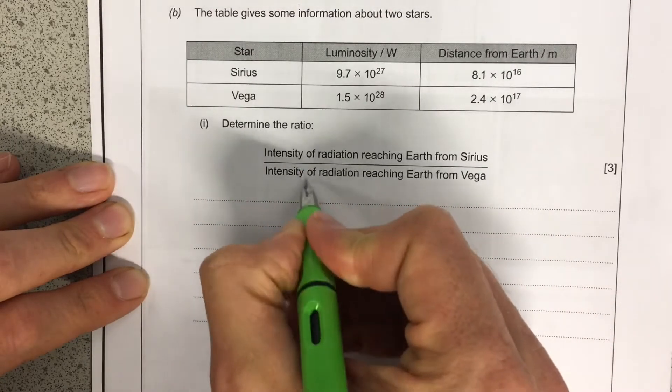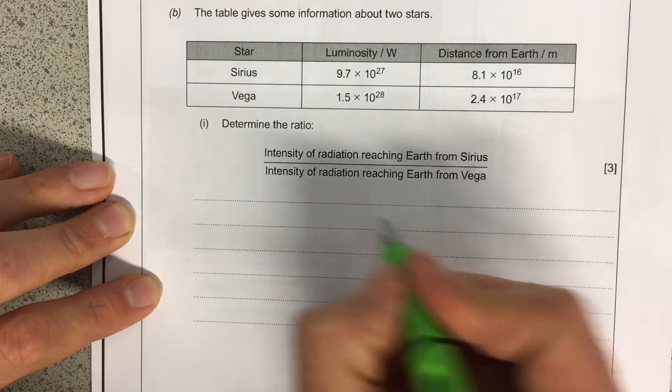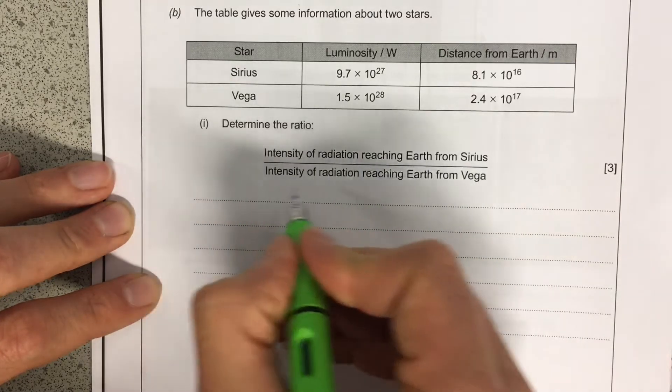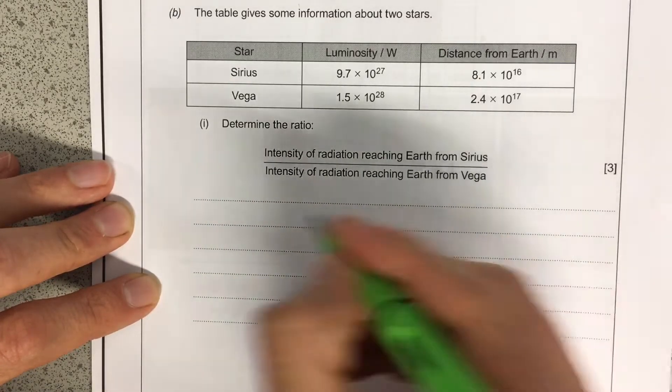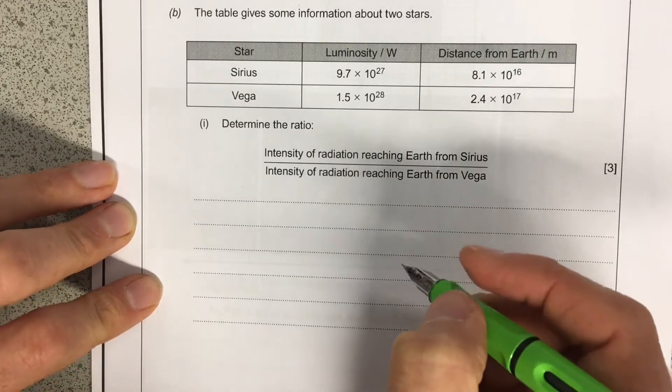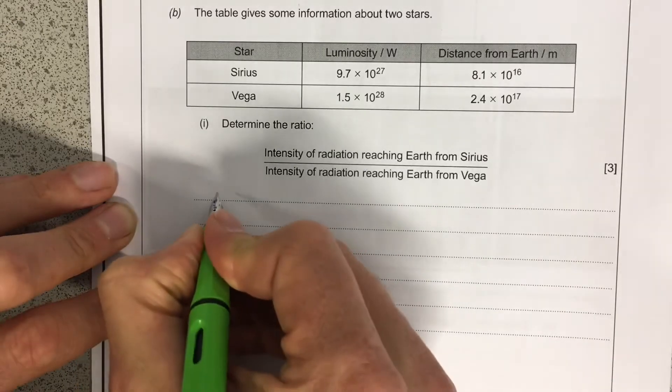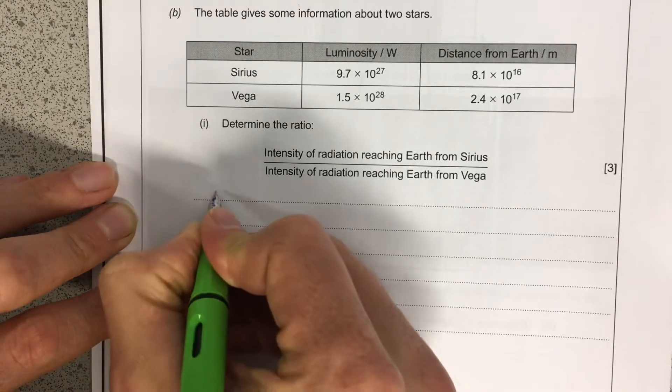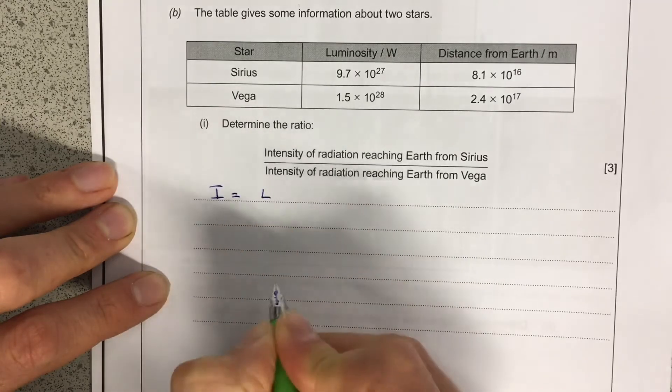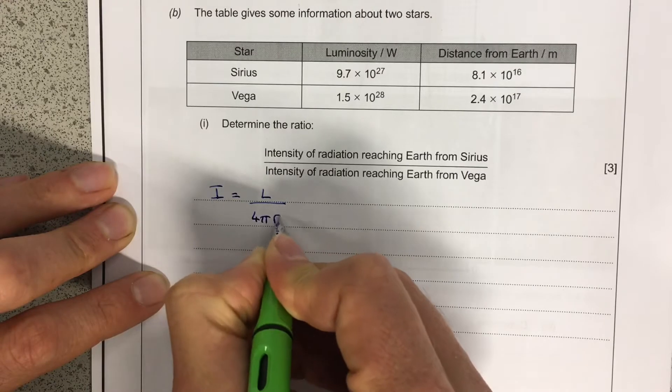So here I want to compare the two intensities. Now there's two ways of doing this. There's a slightly longer way where you calculate the intensity for Sirius and then you calculate the intensity for Vega and then you divide them by each other. Or you can use some mathematical trickery if you like to get straight to the point. So in this one you need to remember, and this is the tricky thing, this one's not on the data sheet, that the intensity of radiation is equal to the luminosity of the star divided by 4 pi r squared, where r is the radius of the distance between the star in question and the observer here on Earth.